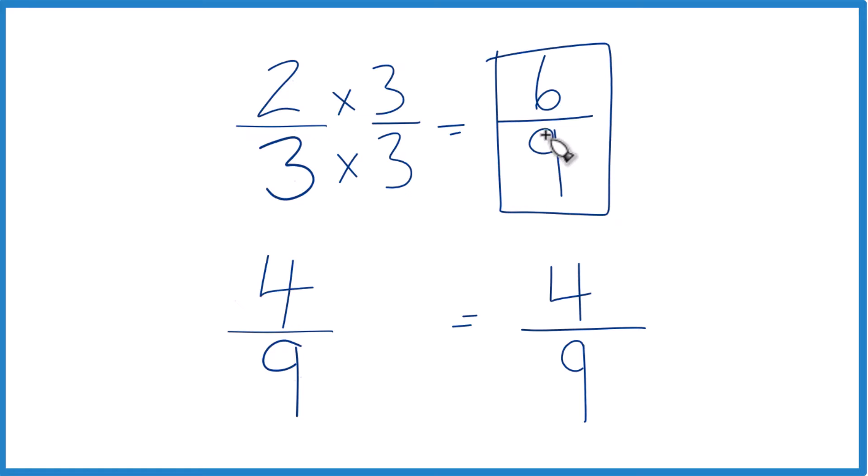So six-ninths is larger than four-ninths. And because these are equivalent, two-thirds is also larger than four-ninths. This is Dr. B, thanks for watching.